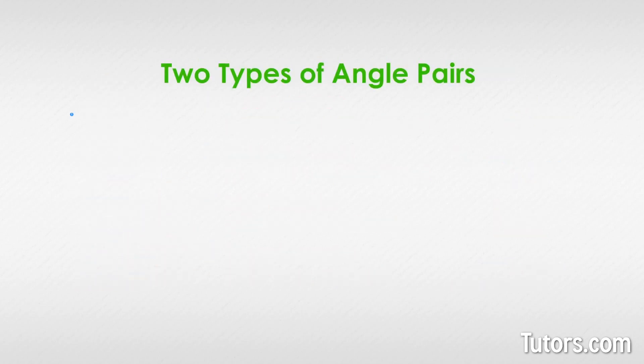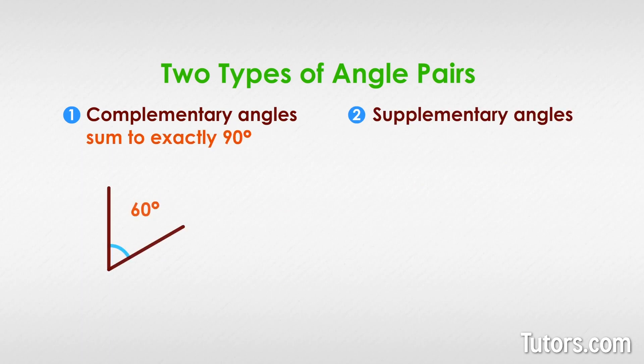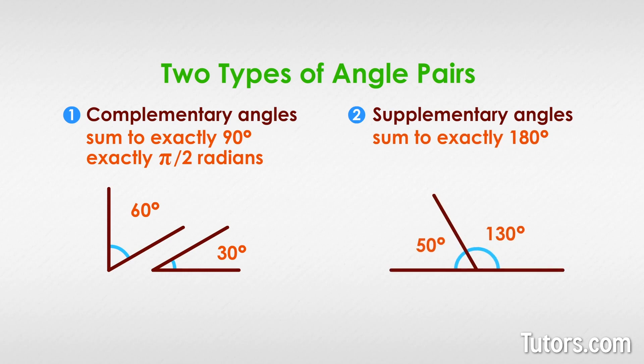Two types of angle pairs are complementary angles and supplementary angles. Complementary angles sum to exactly 90 degrees or exactly pi divided by two radians. Supplementary angles sum to exactly 180 degrees or exactly pi radians.